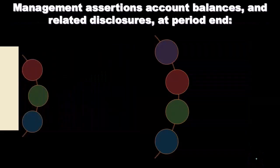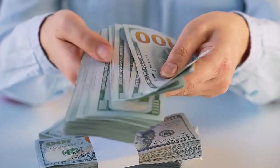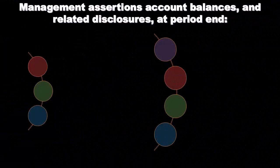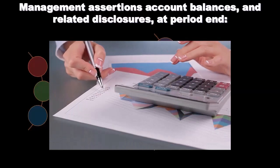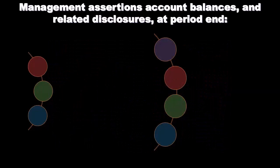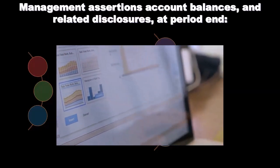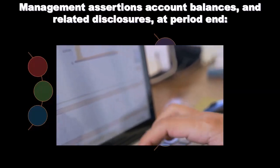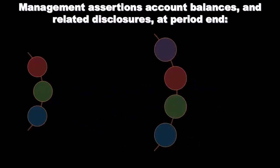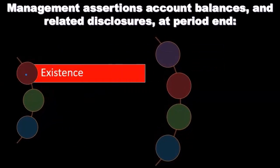Now we're going to look at management assertions related to account balances and related disclosures. When looking at actual accounts, you can imagine going through the balance sheet and checking off these accounts. Similar to checking the structural soundness of a building, we can take the balance sheet, look at something like cash or accounts receivable, take apart the financial statements, and test those actual accounts.